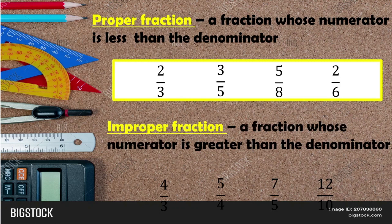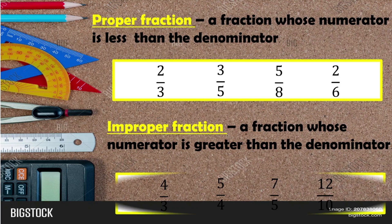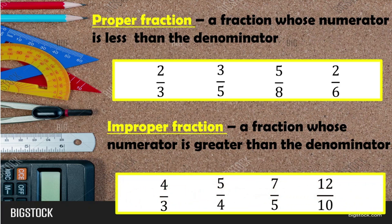Next is improper fraction. A fraction whose numerator is greater than the denominator — kabaliktaran ng proper fraction. The numerator is higher than the denominator. Examples are four-thirds, five-fourths, seven over five, and twelve over ten. Those are examples of improper fraction.